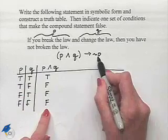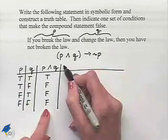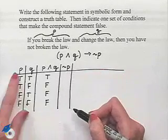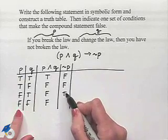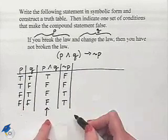We notice on the right-hand side of the conditional we have the negation of P. We'll fill in this column by taking the opposite truth values from our first column.